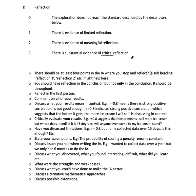There should be at least four points in the IA where you stop and reflect. Using subheadings like Reflection 1, Reflection 2 might help — you don't have to do that, but I often recommend it to my students because it forces you to reflect and also signals to the reader, your teacher, that you are reflecting.